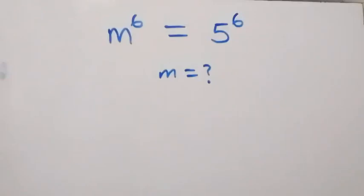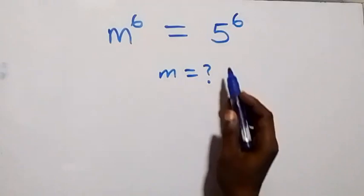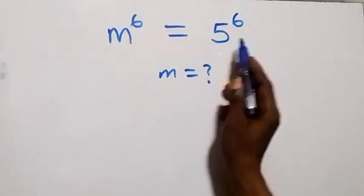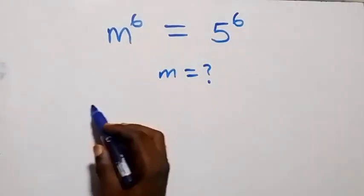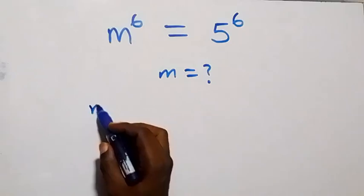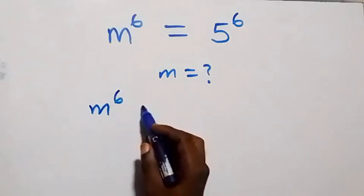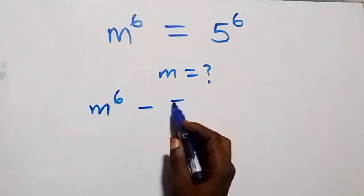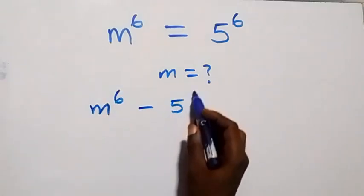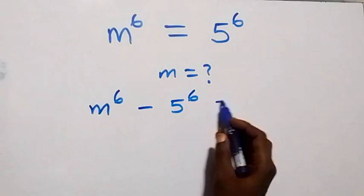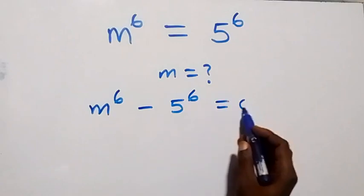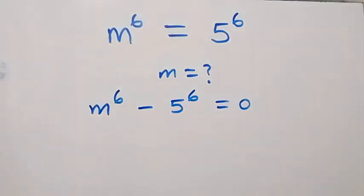Hello, you are welcome. How to solve this nice exponential equation from here? Let's take 5 raised to power 6 to this side, and we have m raised to power 6 minus 5 raised to power 6 equals to 0 from here.